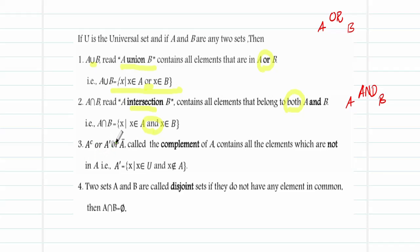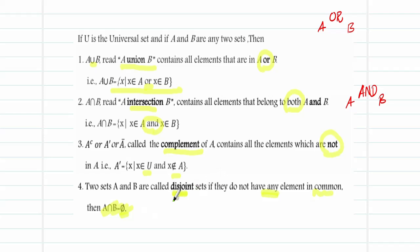The next operator is A to the power C, or A with a prime, or A with a bar on top — you call it the complement of A. It is the collection of all elements that are in the universal set but do not belong to A. Two sets A and B are called disjoint if they have no element in common, meaning A∩B is empty.